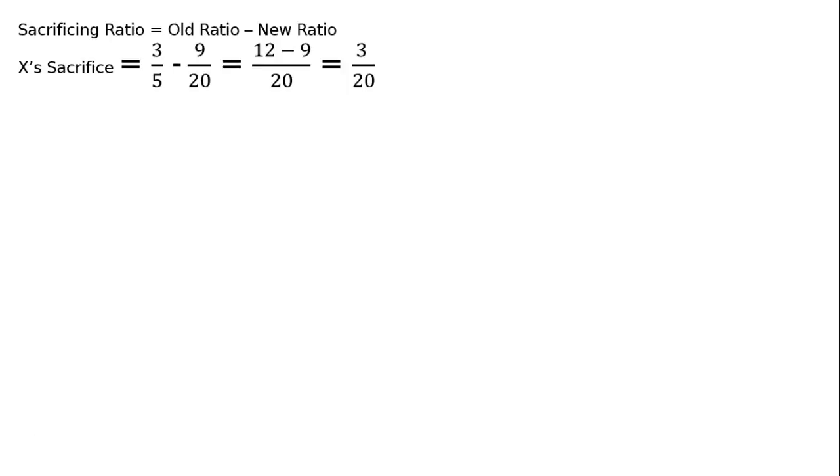Sacrificing ratio equals old ratio minus new ratio. X's sacrifice: old share is 3/5 minus new share 9/20, hence 12 minus 9 upon 20 equals 3/20. Y's sacrifice: old share 2/5 minus new share 6/20, that equals 8 minus 6, which is 2/20. Therefore, the sacrificing ratio of X:Y equals 3:2.